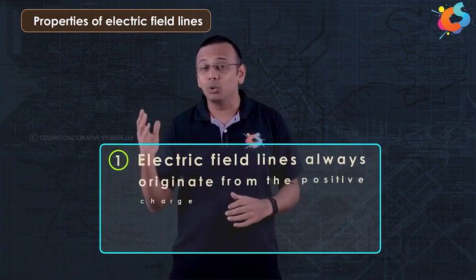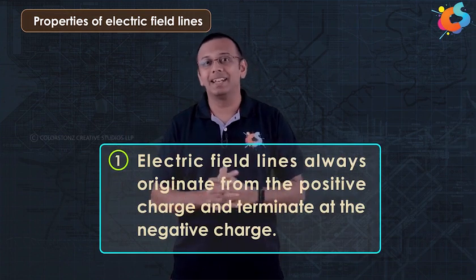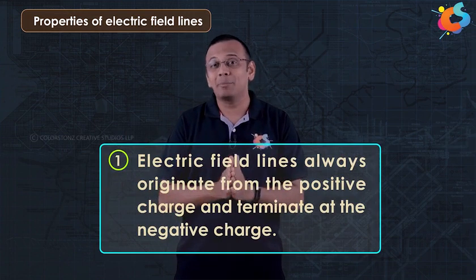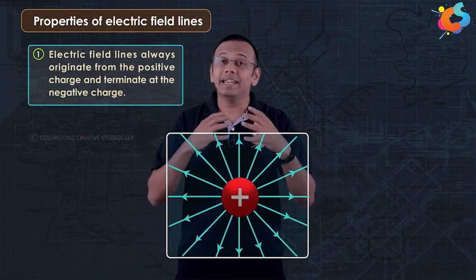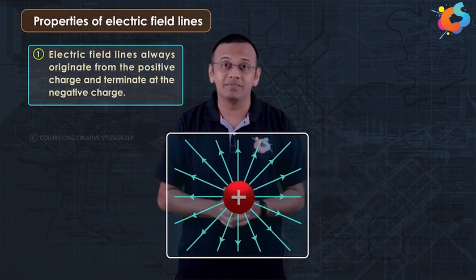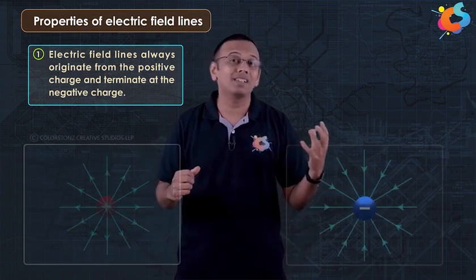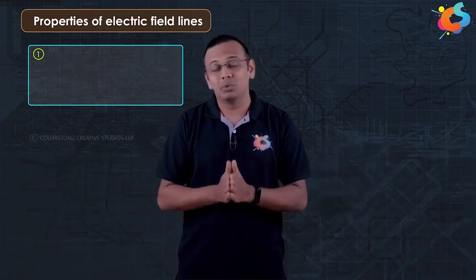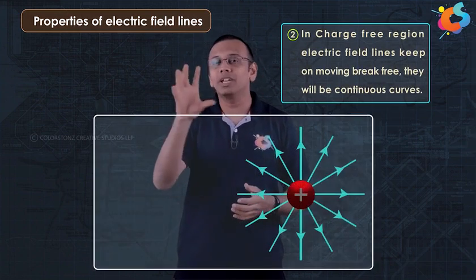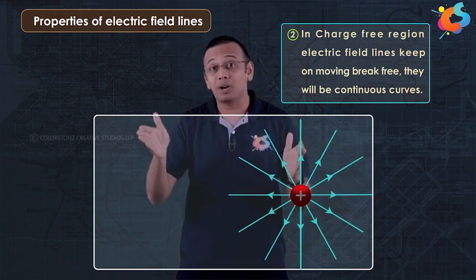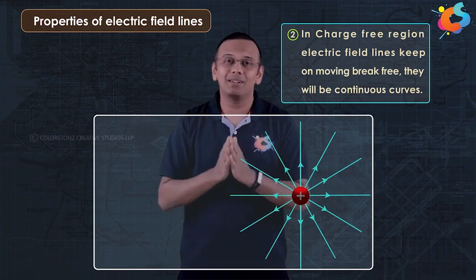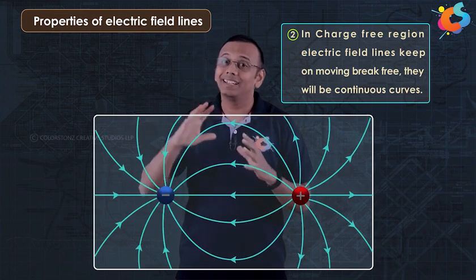The first property says that electric field lines will always originate from positive charge and they will terminate at the negative charge — we already saw this in the case of the electric dipole. If there is charge of only one type in the system, the electric field lines will keep moving to infinity, as was the case with a single positive or negative charge. The second property says that in a charge-free region, the electric field lines will be continuous curves — they will stop only if a charge comes in their path; otherwise they keep moving continuously till infinity.